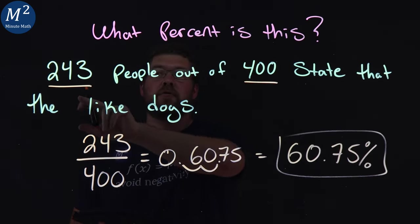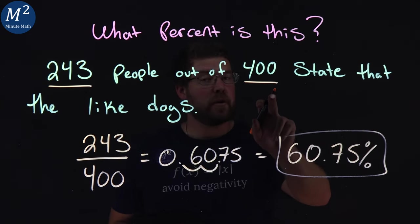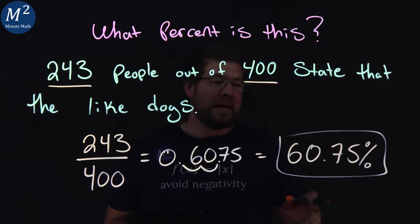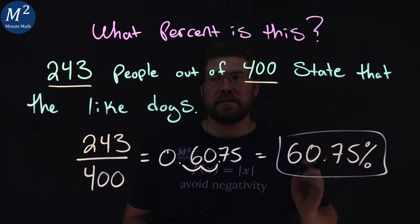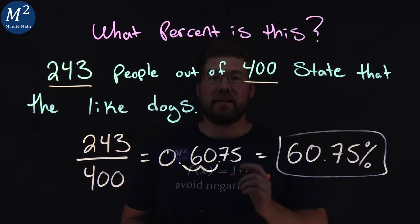And so if 243 people out of 400 state that they like dogs, that would equal 60.75 percent of people state that they like dogs.